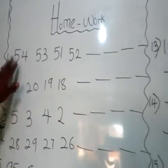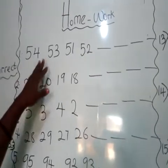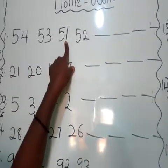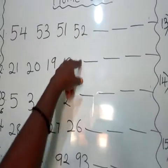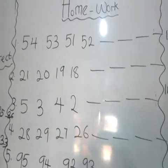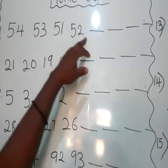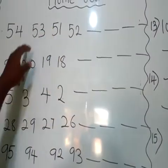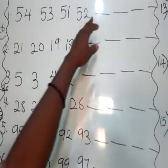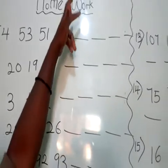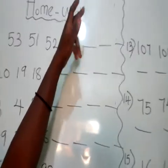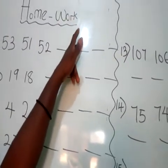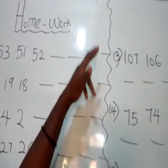And here in our homework, number 1: we have 54, 53, 51, and 52. Which number comes first? We have 51 as our first number. Write it down on the line and make sure it is correctly done. We have 51, followed by 52, followed by 53, and then 54.